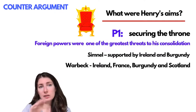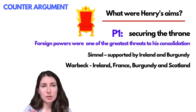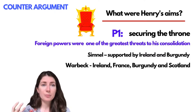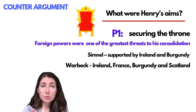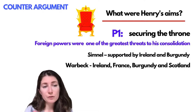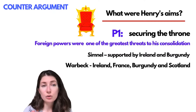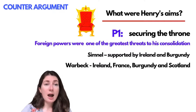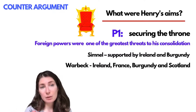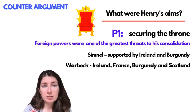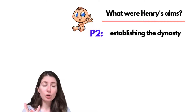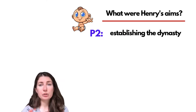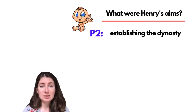On the other hand, Warbeck did not receive any support from the north of England — notably from York itself. That's an interesting contrast in how Henry managed to establish himself domestically versus internationally at this point. Moving to paragraph two: how far was he able to use his foreign policy to establish the dynasty?